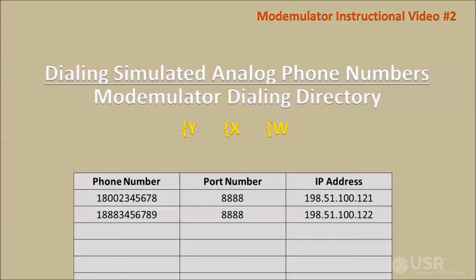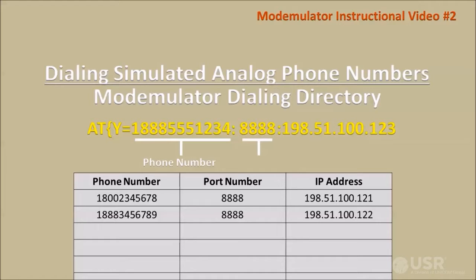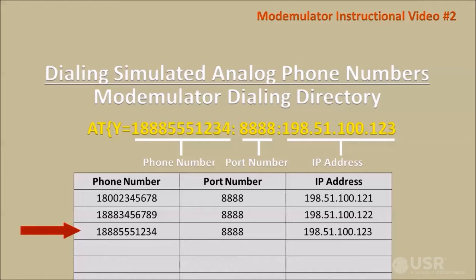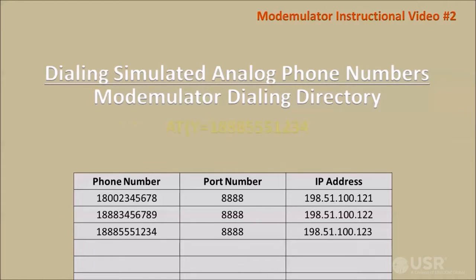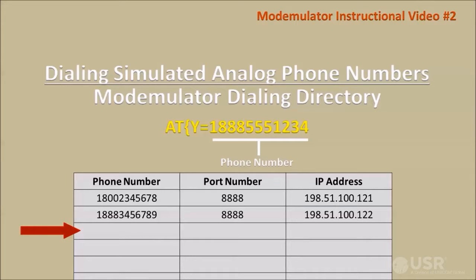The Modemulator provides three commands to manage the dialing directory. When the Brace Y command specifies a phone number, a port number, and an IP address, sending this command adds or overwrites one entry in the dialing directory. If the port number is omitted, the default port number 8888 is entered. When the Brace Y command specifies only a phone number, sending this command deletes one entry from the dialing directory.